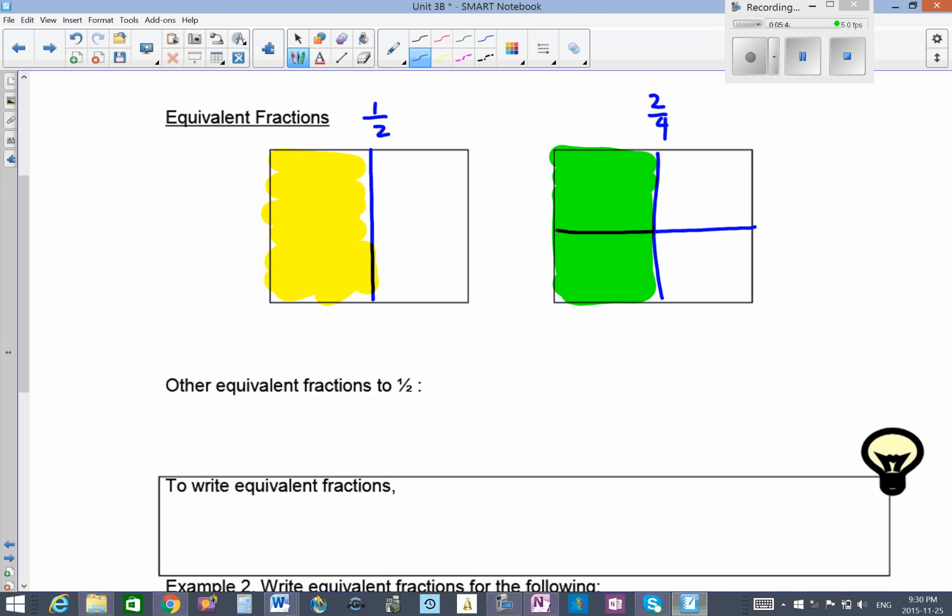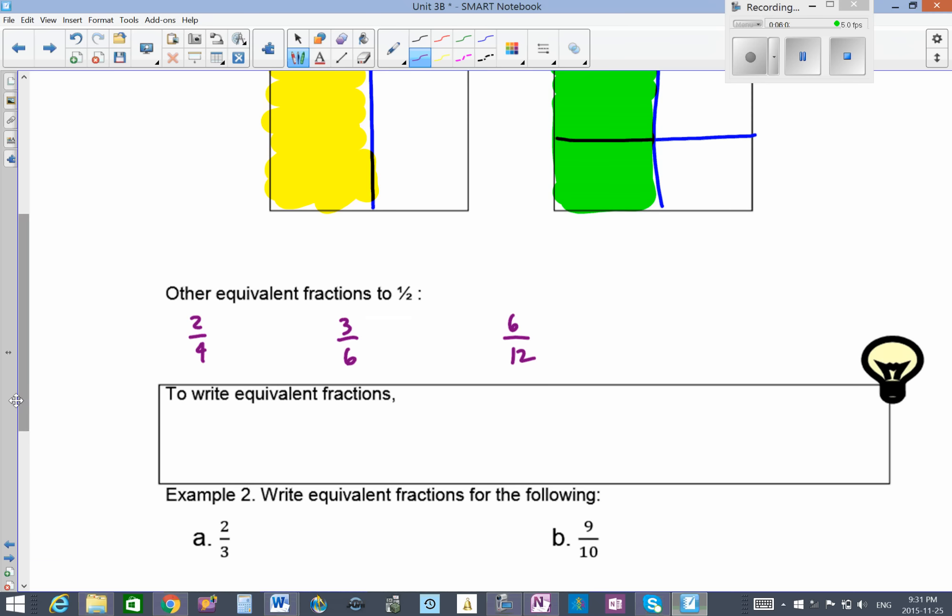What are other equivalent fractions to one half? There's 2 over 4, there's also 3 over 6, there's also 6 over 12. How do we generate equivalent fractions? Six over 12 was the original one half multiplied by 6 on both your numerator and your denominator to generate 6 over 12.